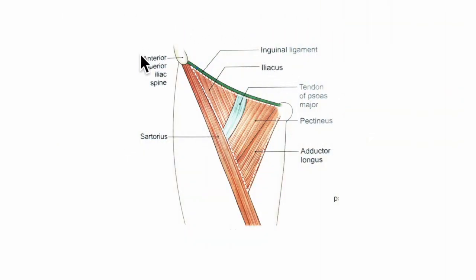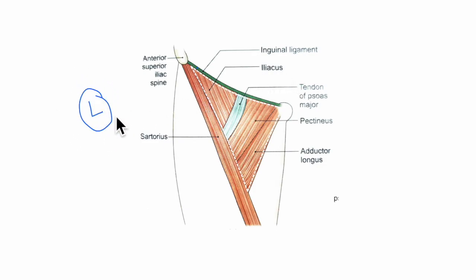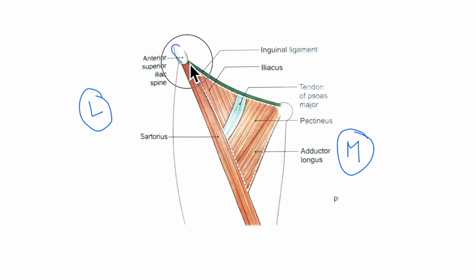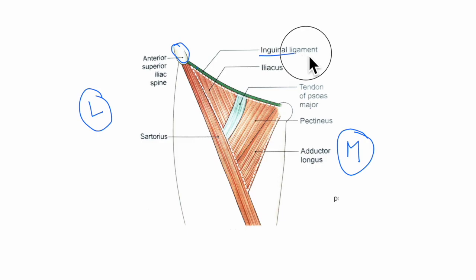This diagram shows the anterior aspect of the thigh. This is its lateral aspect, that is the part away from the midline of the body, and here is its medial aspect, that is the part near to the midline of the body. Here you can see the ASIS, this is the sartorius muscle, and here is the inguinal ligament.